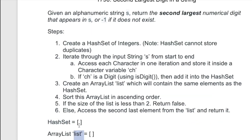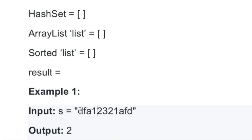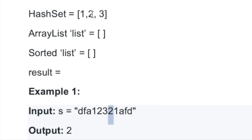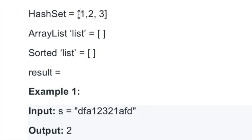Let's trace through the first example with both data structures initially empty. We iterate through the string: the first few characters are not digits. Then we find a digit and add it to the hash set, then another digit added, then another. When we encounter a duplicate two, it's already present in the hash set so it won't be stored again. Similarly, a duplicate one is skipped. The remaining characters are not digits. The hash set ends up containing the unique digits found.